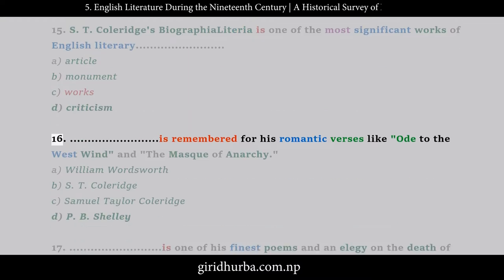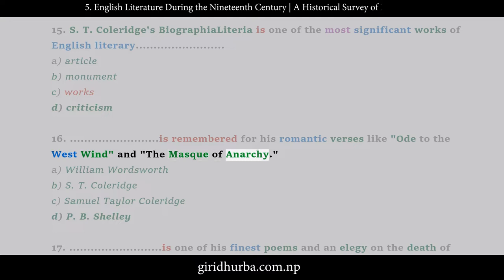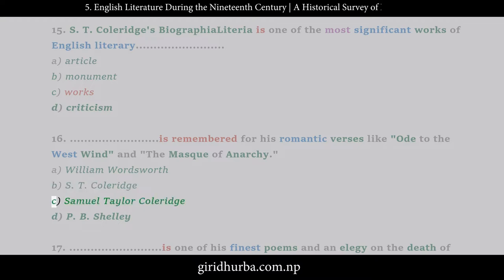Question 14: Kubla Khan — this poem gives the imaginary description of the castle of Kubla Khan, the emperor of ancient China. A. Mongolia, B. China, C. Korea, D. Vietnam. Question 15: S.T. Coleridge's Biographia Literaria is one of the most significant works of English literary: A. article, B. monument, C. works, D. criticism.